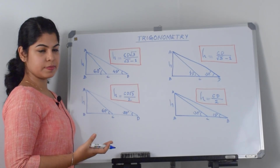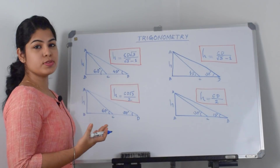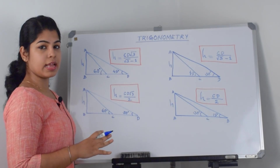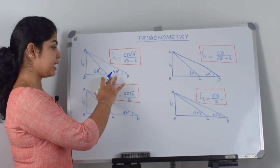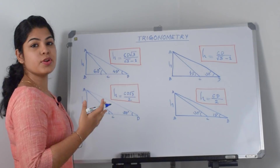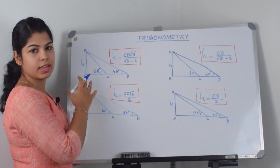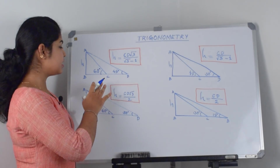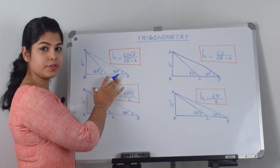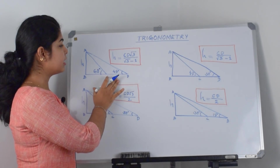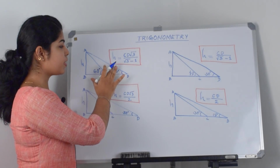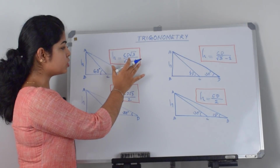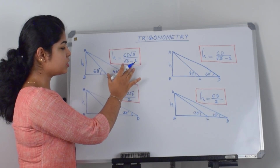These are our four formulas. You can use these formulas when questions are given with two angles on the same side and you are asked to find the distance or the height. Let us check the first case. Here the angles are 60 degrees and 45 degrees. The value of h in this case is equal to cd multiplied by root 3 over root 3 minus 1.